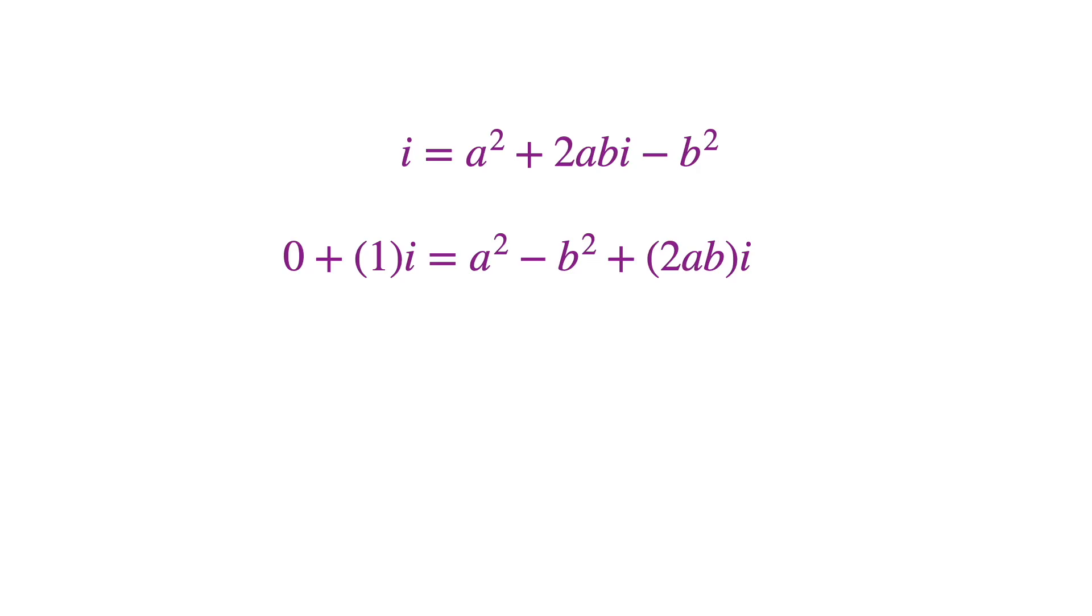And the imaginary part on the left must be 1, and on the right must be 2ab. So we can equate the real and imaginary parts. Now we have two equations and two unknowns. Let's see if we can solve for a and b.